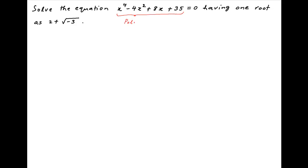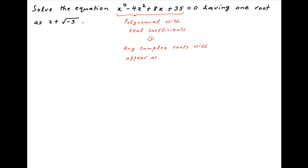The left-hand side of the given equation is a polynomial of fourth degree with real coefficients. It therefore follows that any complex root of this equation will appear as complex conjugates. Therefore, if x = 2 + i√3 is given to be a root of this equation, then its complex conjugate 2 - i√3 will also be a root.